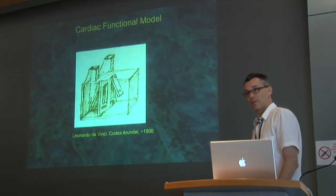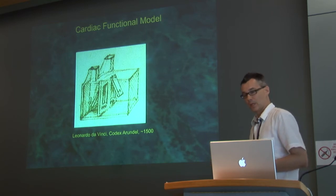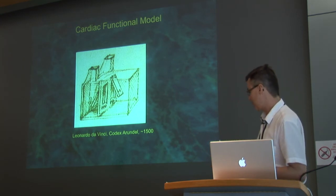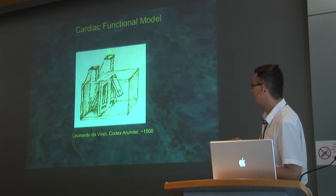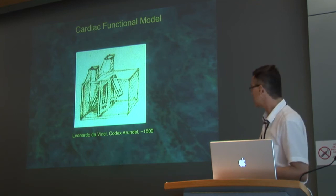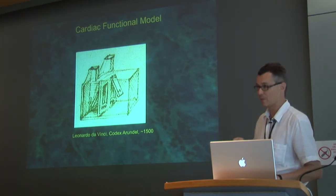That was the first part of the talk. I want to switch gears completely and go to functional modeling. What you see here is one of the first functional models I am aware of, described by Leonardo da Vinci around 500 years ago — his thought was that the heart was somehow an oven with the lungs being chimneys, published in the Codex Arundel. This is surely not a personalized model and is far off in scale from what I will present now.